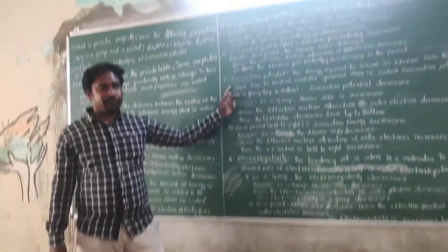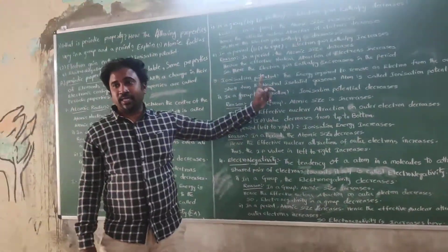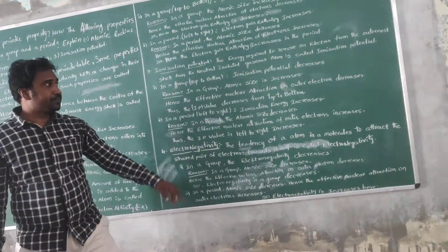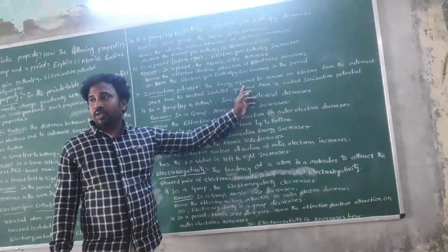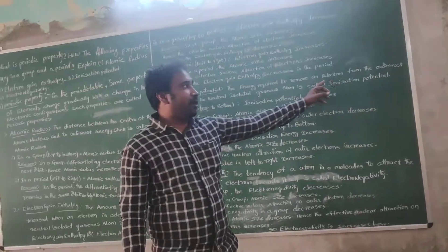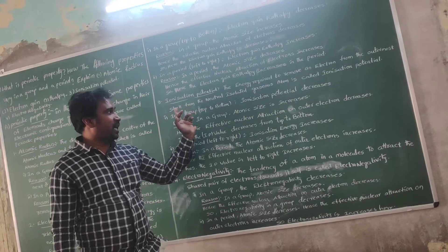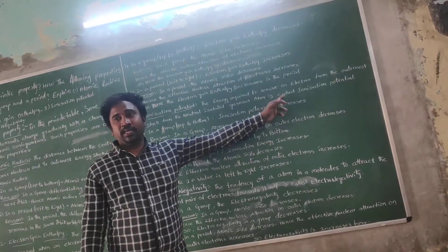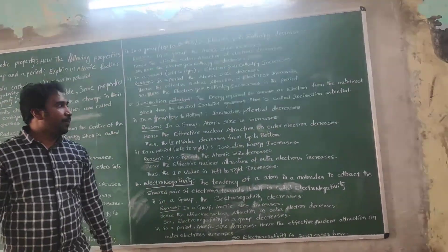The first topic is electronegativity. What is electronegativity? Electronegativity is the tendency to remove an electron from the most abundant atom at the bottom of the system. This is called electronegativity.